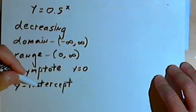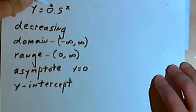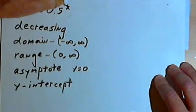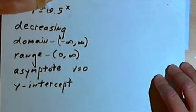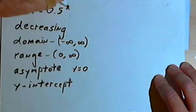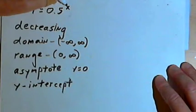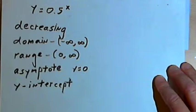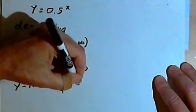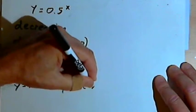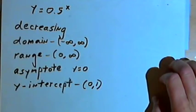We can figure out what the y-intercept would be. The y-intercept happens when you have an x value of 0. So 0.5 to the 0 power is going to be 1, because any number to the 0 power is 1. So we'll have a y-intercept at 0, 1.